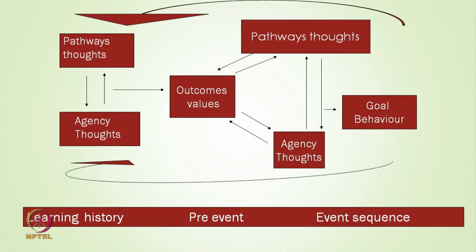Past experiences play a significant role in determining our level of hope. In the past, we had pathways thoughts as well as agency thoughts and obtained certain outcomes — that is our learning history. On the basis of past pathways, motivational level, and outputs, we develop today's pathways thoughts, agency thoughts, and goal behavior. Learning history, pre-events, and event sequences are all very important when we talk about hope theory.